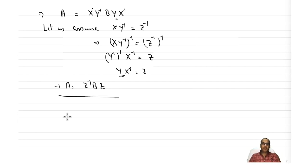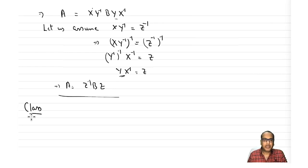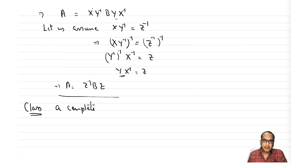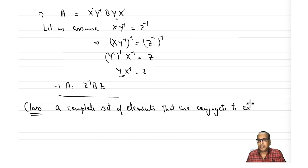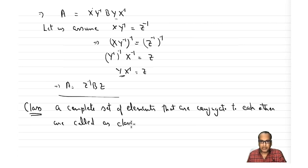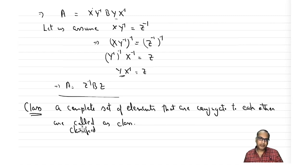Now that we have understood what a conjugate is, let us look at the definition of a class. A complete set of group elements or symmetry operations that are conjugate to each other are classified as a class.